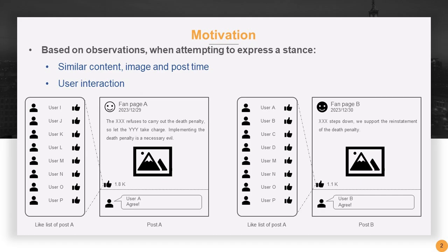In our observation, when users on social media express their thoughts on an issue, users with similar stance often have posts with similar content, accompanied by the same or similar images. This type of post also tends to attract users with similar views to interact with it.